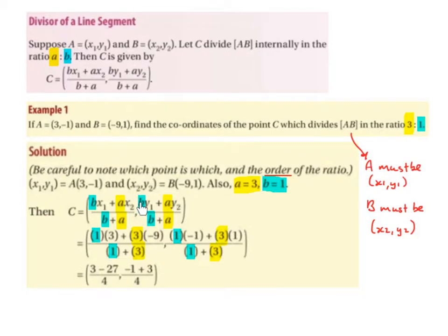Then we have b, again, which is 1, multiplied by y1, which is -1. Bring down the plus. Then we have a, which is 3, multiplied by y2, which is 1. And again, that's all divided by b plus a, which is 1 plus 3.